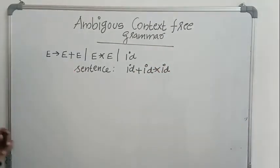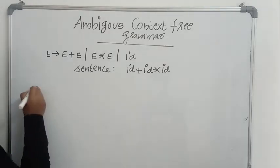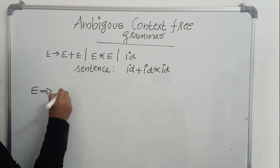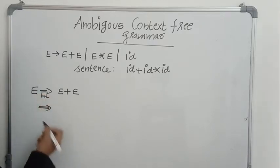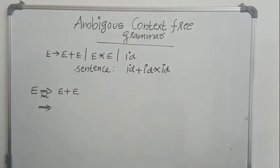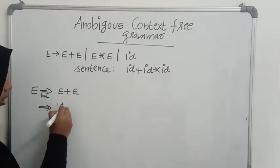Let's see how we can derive the sentence using two leftmost derivations or two rightmost derivations. We should be able to derive it using at least two leftmost derivations or two rightmost derivations. I will try it with leftmost derivation. So, e gives — I will start with E gives E plus E. Now, see I am following leftmost derivation. So, E gives E plus E, and I am converting this E into id.